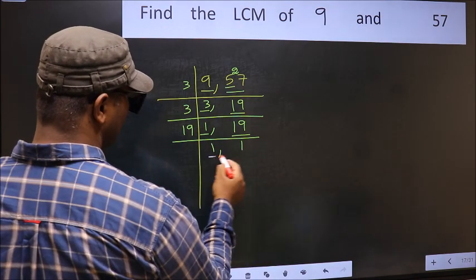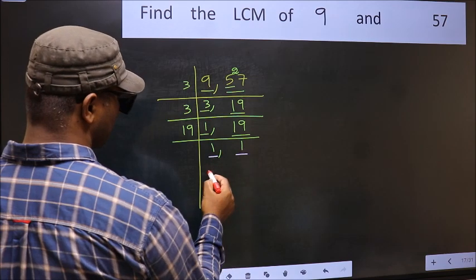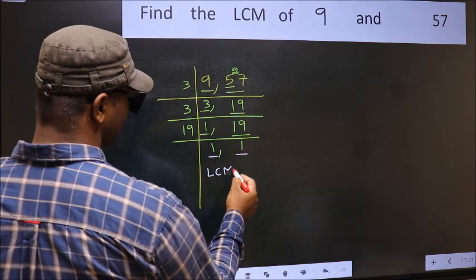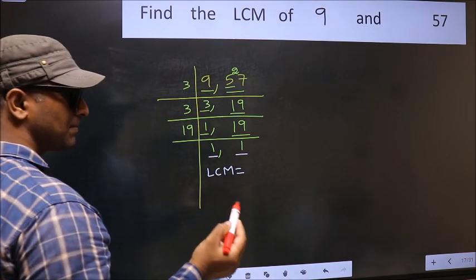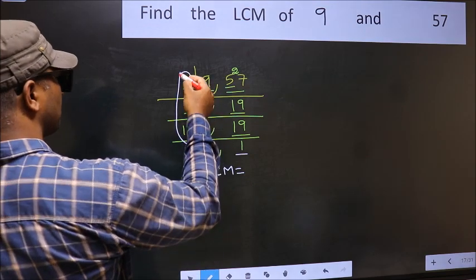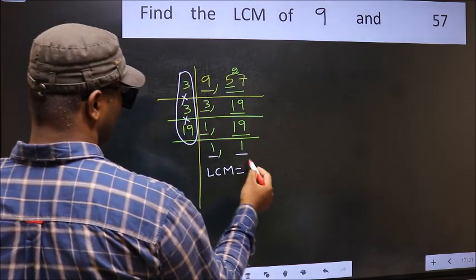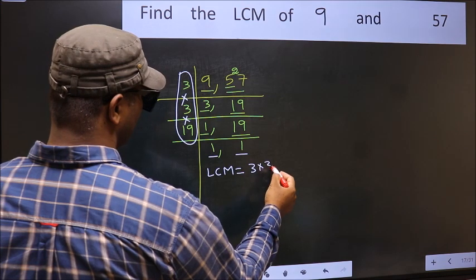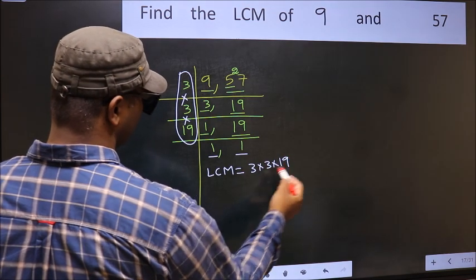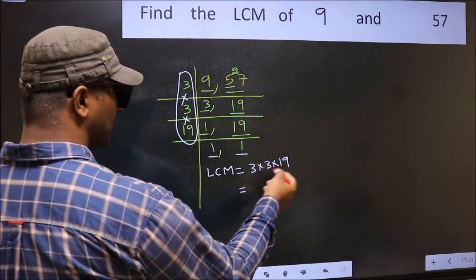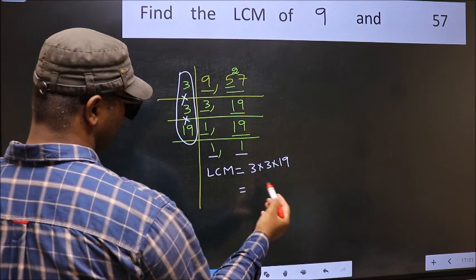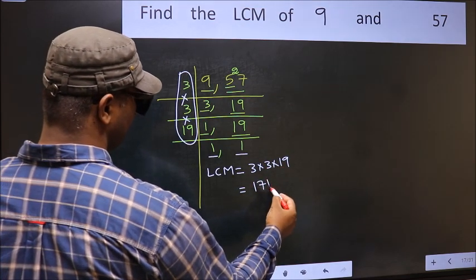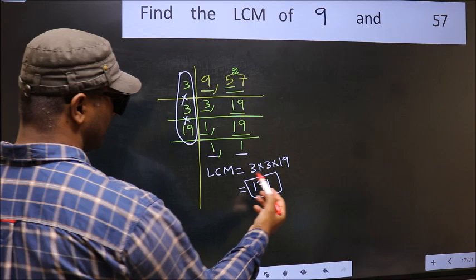So we got 1 in both places. So our LCM is the product of these numbers, that is 3 into 3 into 19. When we multiply these numbers, we get 171 as our LCM.